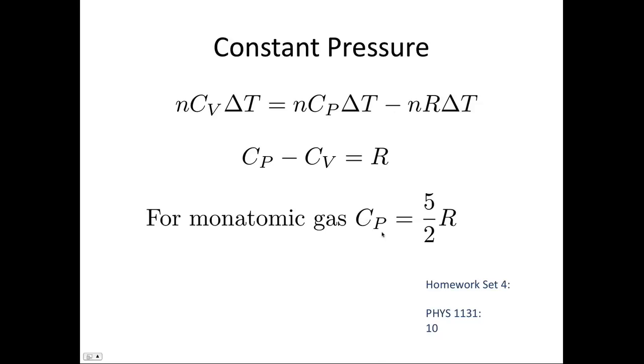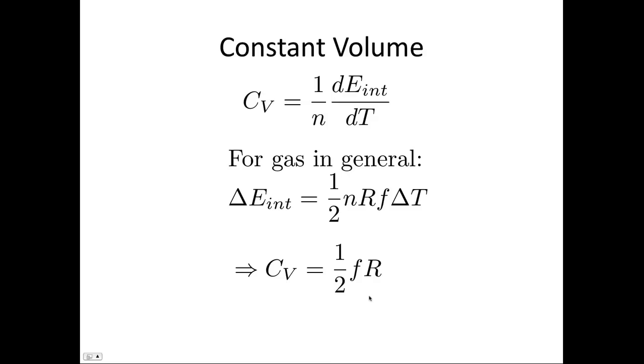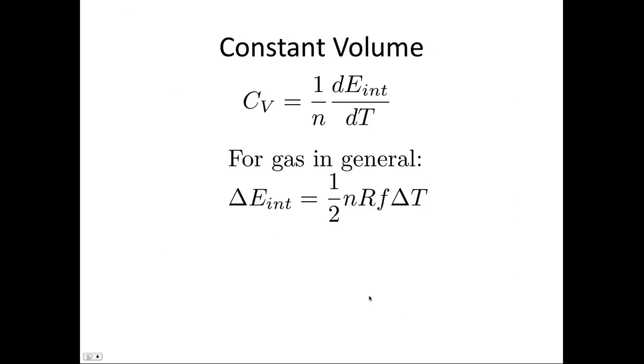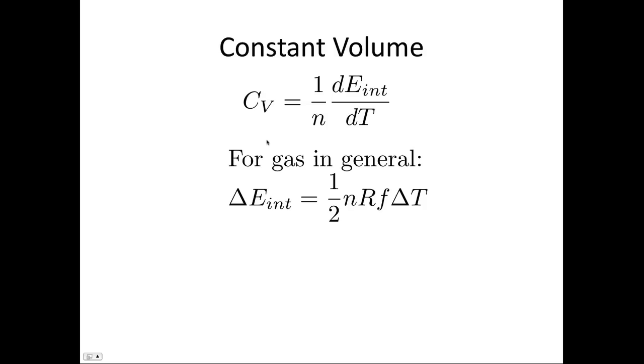So for a monatomic gas, this turns out to be Cp is equal to 5 over 2R, because remember Cv was 3 over 2R. And so solving that, we get Cp is equal to 20.785. We can check this against the experimental data, and we get 20.8 for helium, argon, neon, and krypton, which is all in agreement with that 20.785.